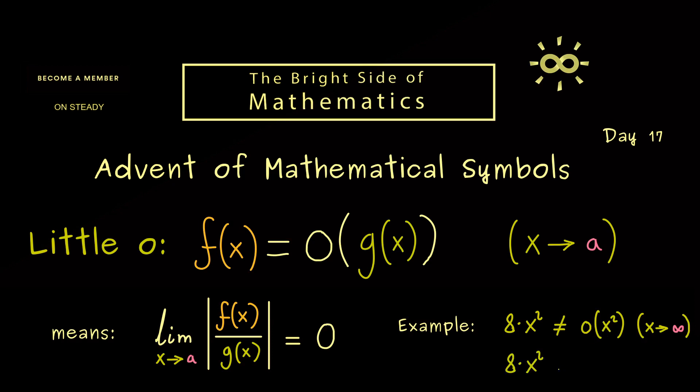However, if we consider little o of x cubed, we have that the limit goes to 0. So we can say this function 8 times x squared is little o of x cubed.